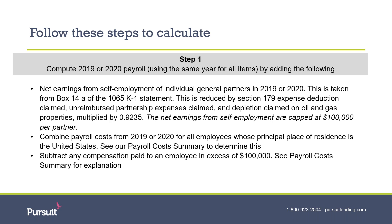You will take this figure and add it to the payroll costs from 2019 or 2020 from all employees whose principal place of residence is the United States. Again, the maximum amount per employee is $100,000, so you have to subtract out any compensation paid above this. For more information, please visit our website, which includes a payroll cost summary explaining the specifics regarding these payroll costs.